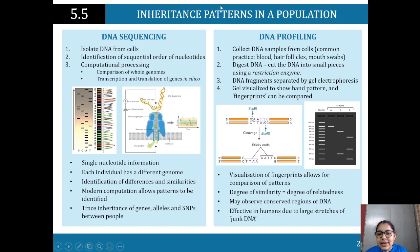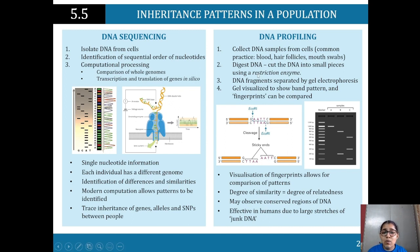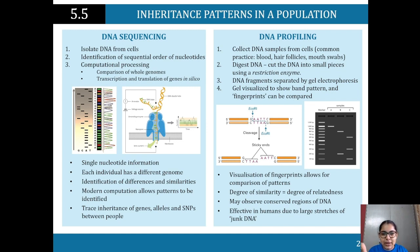From DNA sequencing we can see the differences between DNAs. For DNA profiling, we collect DNA samples from cells — common practice includes blood, hair follicles, and mouth swabs. We then digest the DNA, cutting it into small pieces using a restriction enzyme to identify what part of the DNA we are looking at, such as the allele for hair or eye color. DNA fragments are then separated by gel electrophoresis.